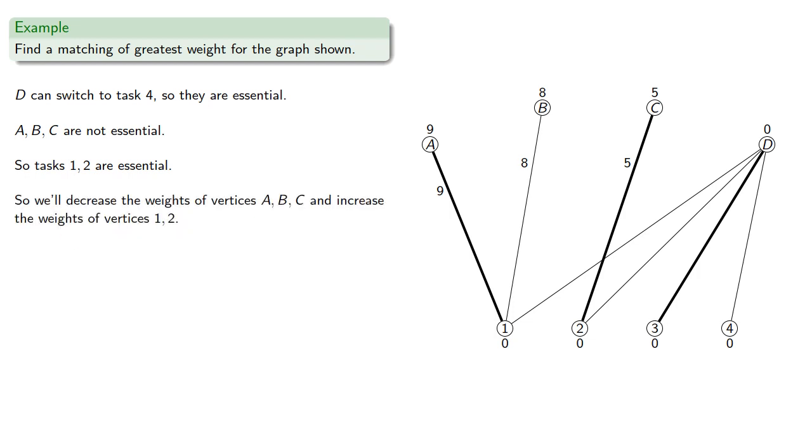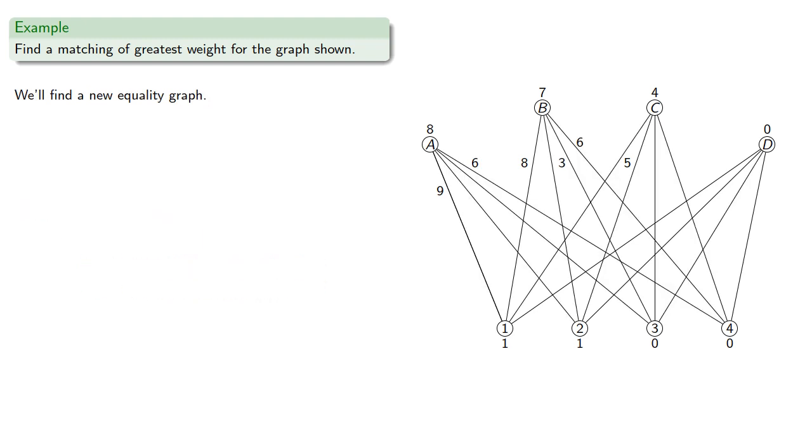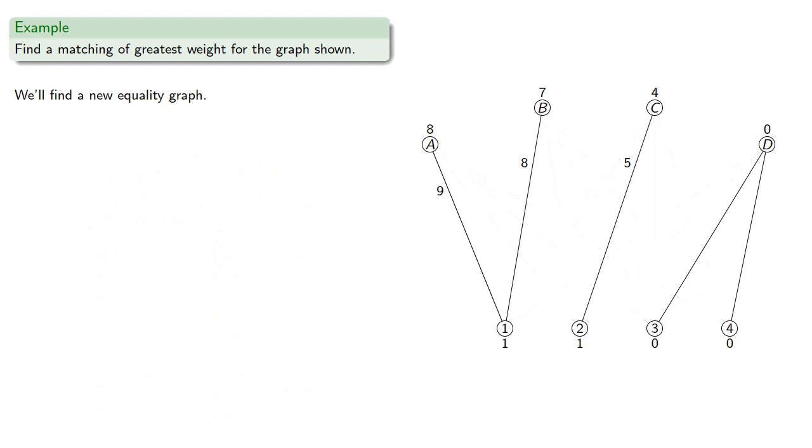So we'll decrease the weights of vertices A, B, and C, and increase the weights of vertices 1 and 2. We'll find a new equality graph, and a new matching.